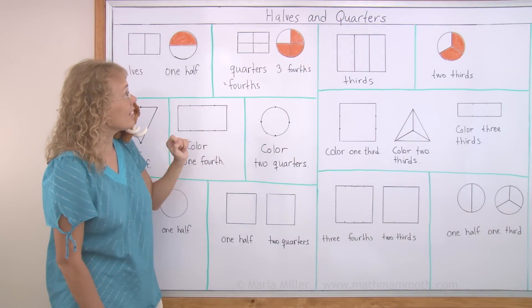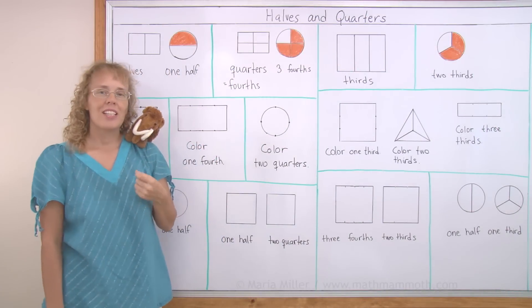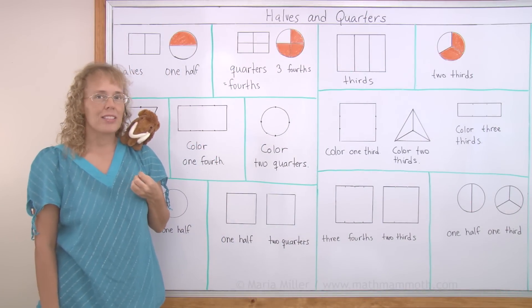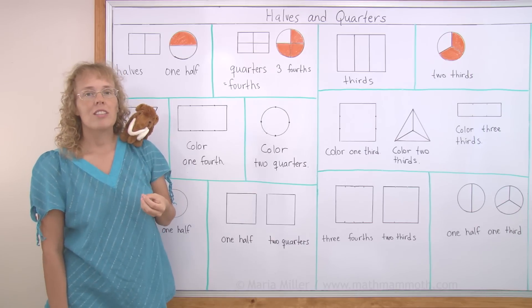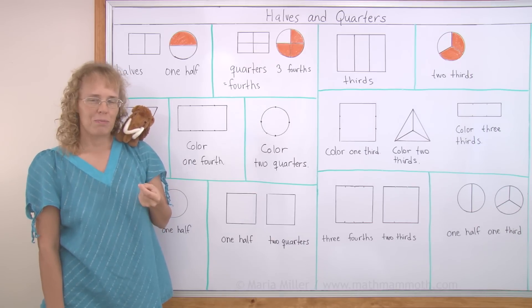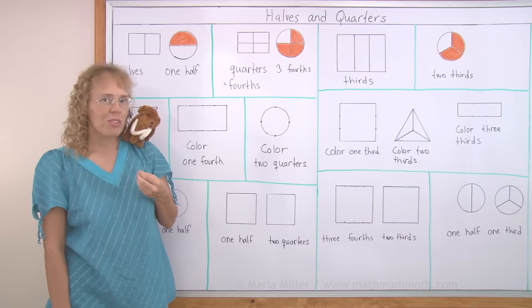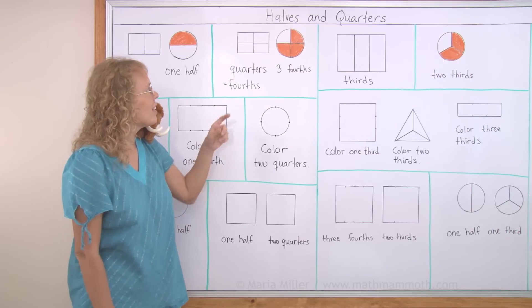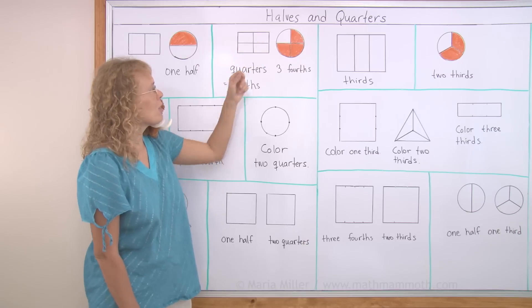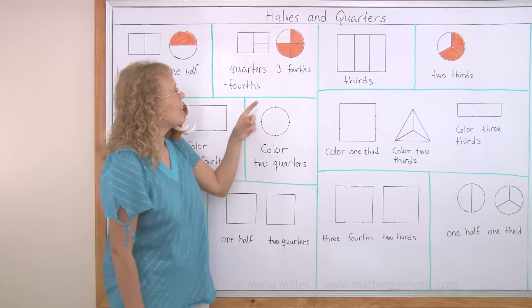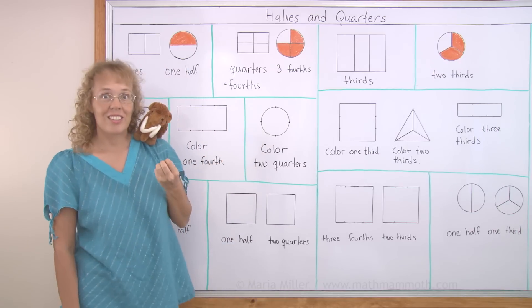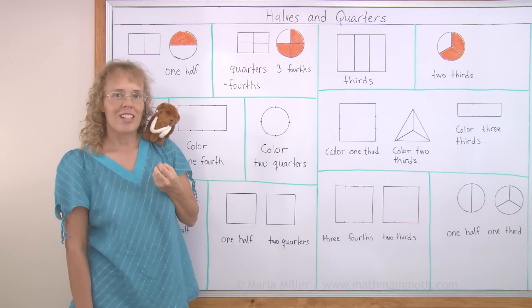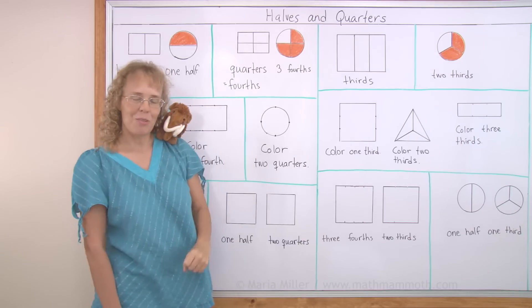Over here, this rectangle and the circle both, they are divided into four equal parts. And each part is a quarter, or we also say a fourth. Either you can say a fourth or a quarter. It's divided into four quarters or four fourths. And here, three fourths are colored, or you could say three quarters are colored, and then one quarter is white.